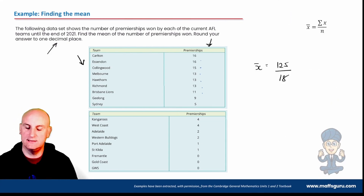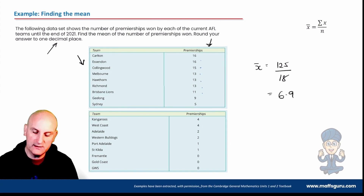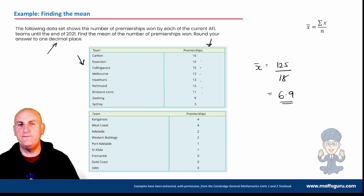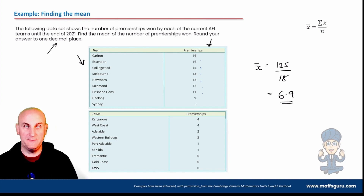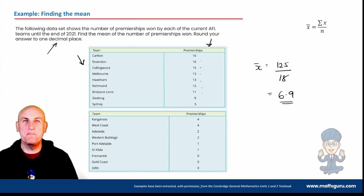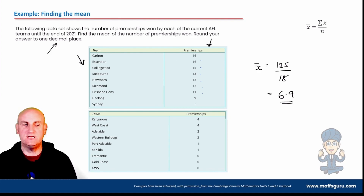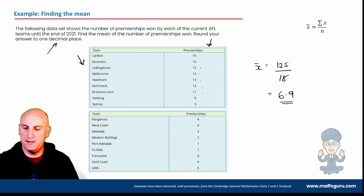So X-bar = 6.9, meaning the average number of premierships won is 6.9. On its own, that's not particularly meaningful, but there is another way of finding the mean using the calculator's list and statistics functions.